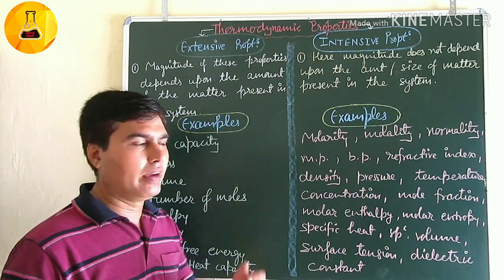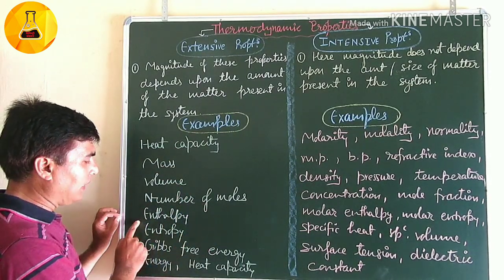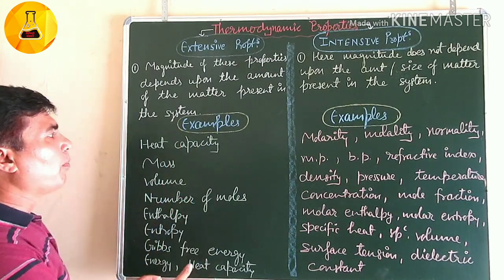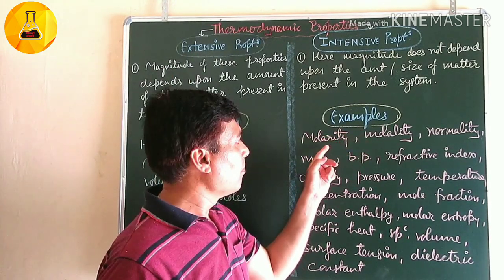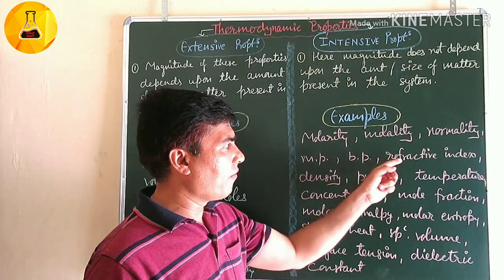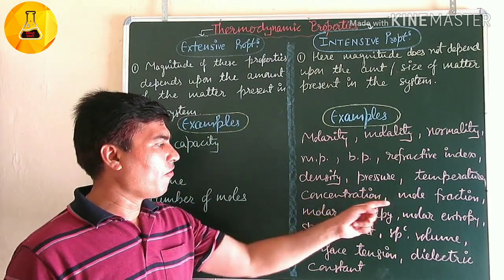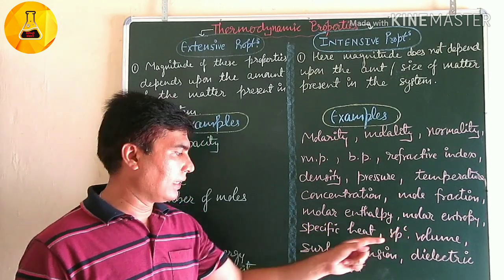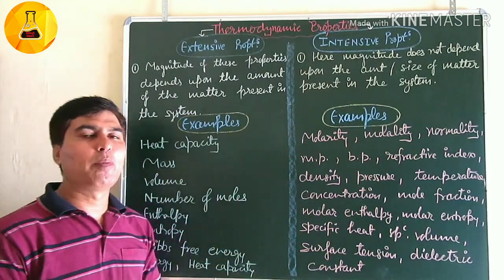Examples of extensive properties include: heat capacity, mass, volume, number of moles, enthalpy, entropy, Gibbs free energy, and energy. Examples of intensive properties include: molarity, molality, normality, melting point, boiling point, refractive index, density, pressure, temperature, concentration, mole fraction, molar enthalpy, molar entropy, specific heat, specific volume, surface tension, and dielectric constant.